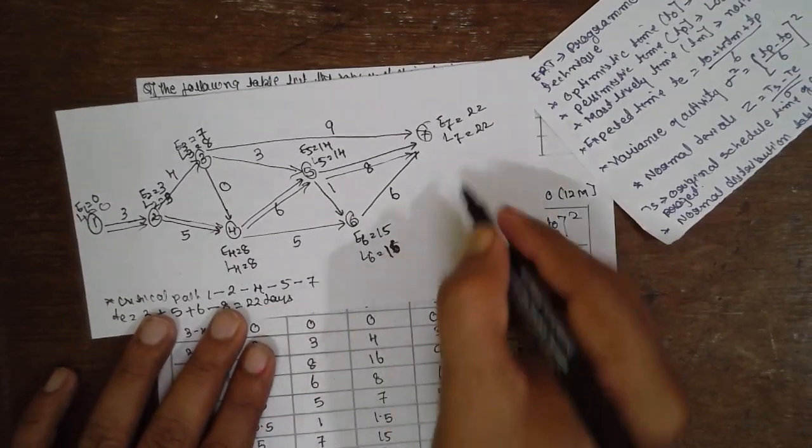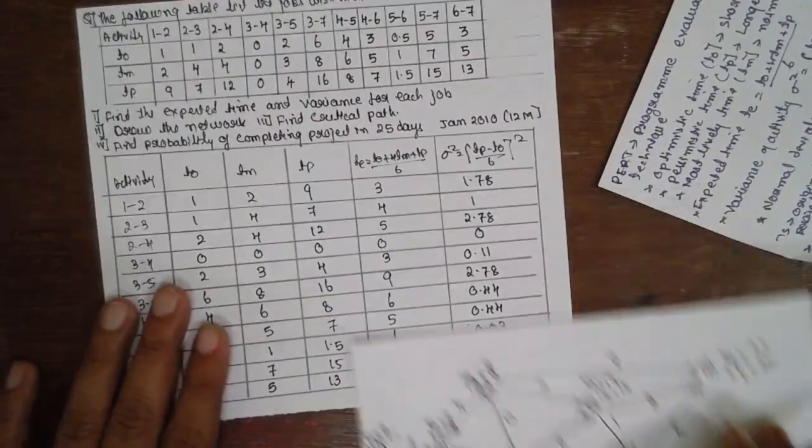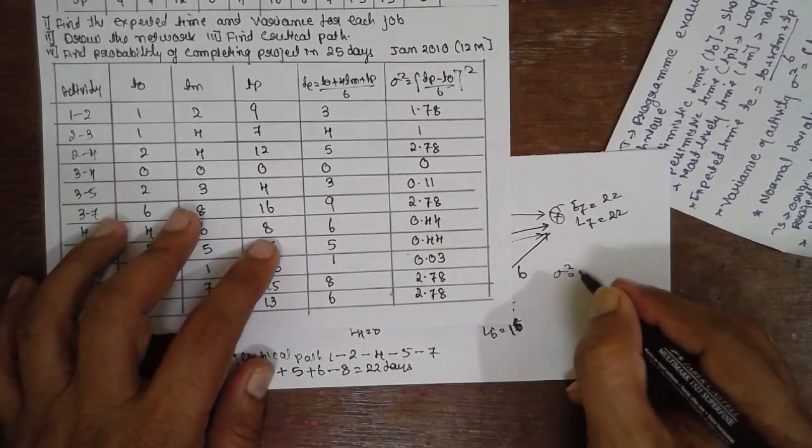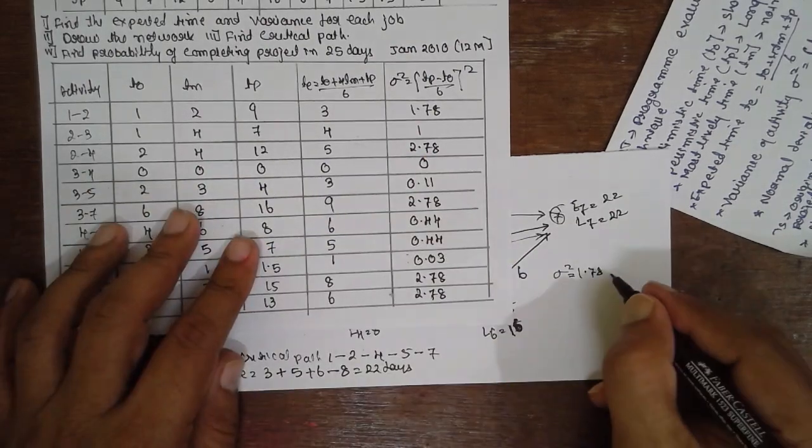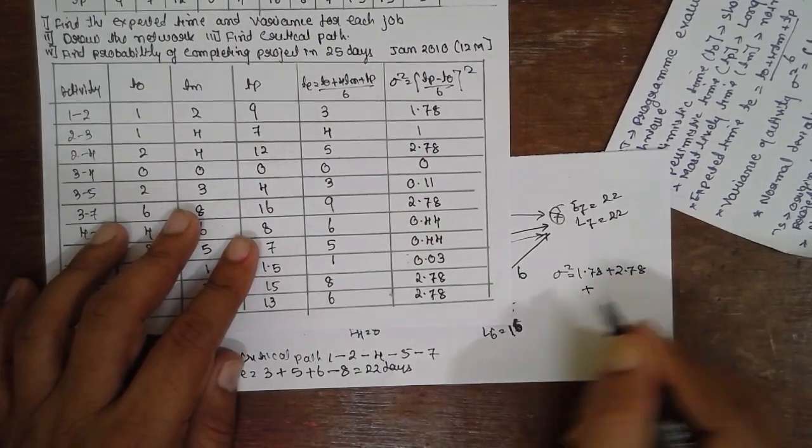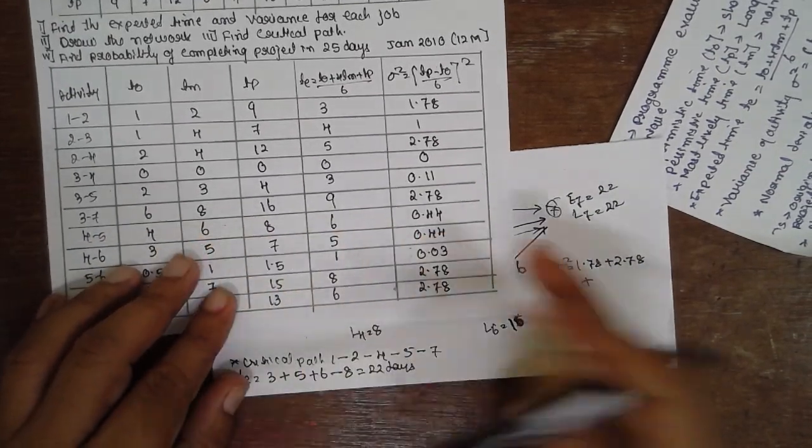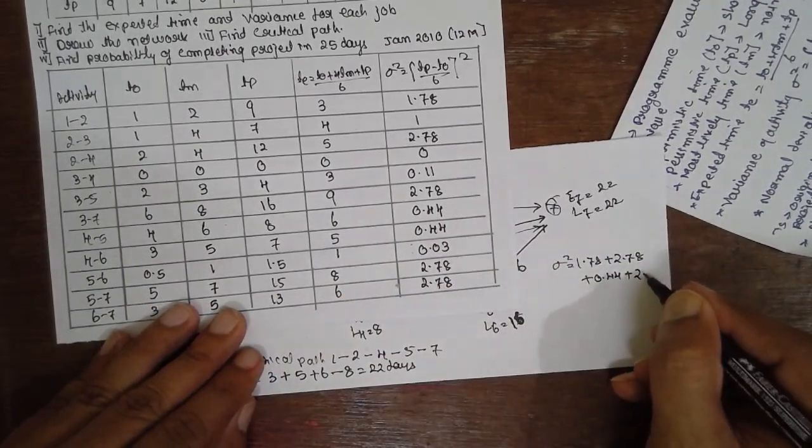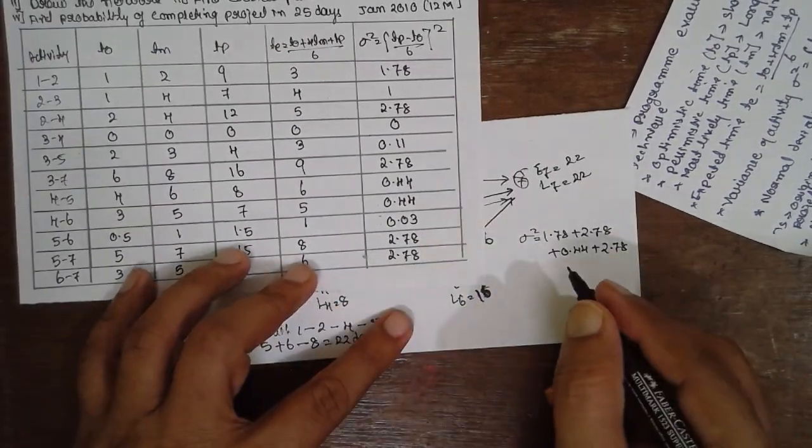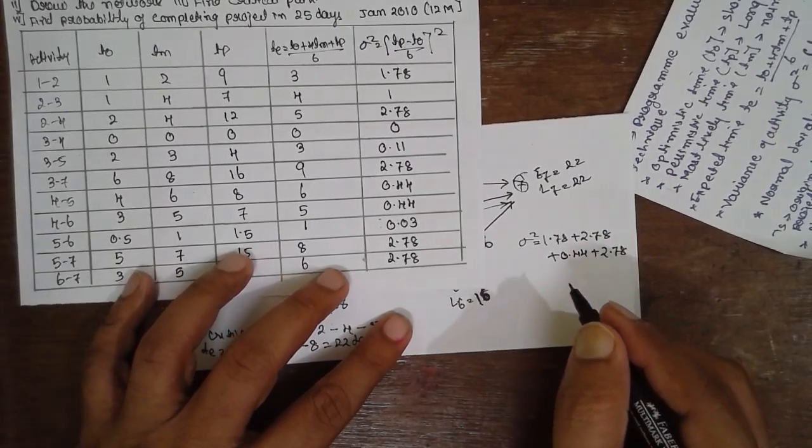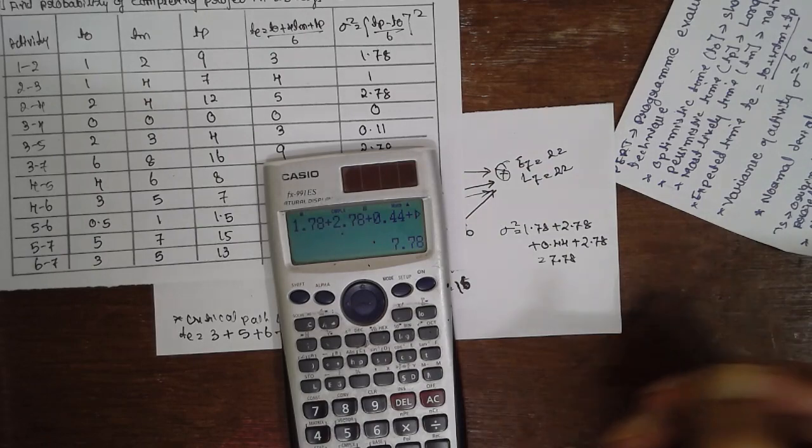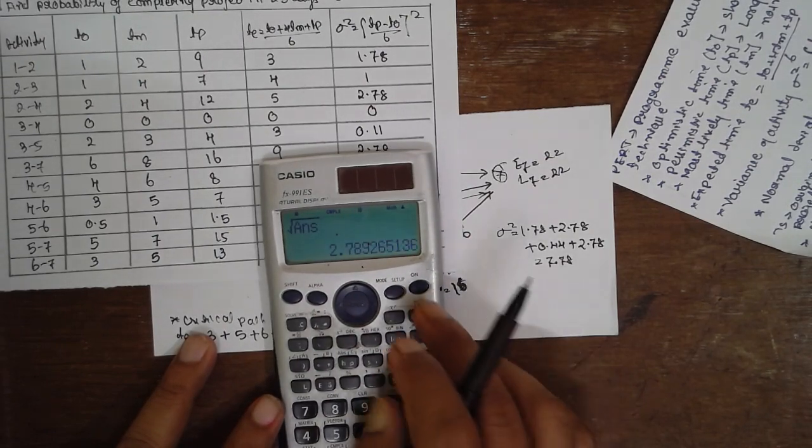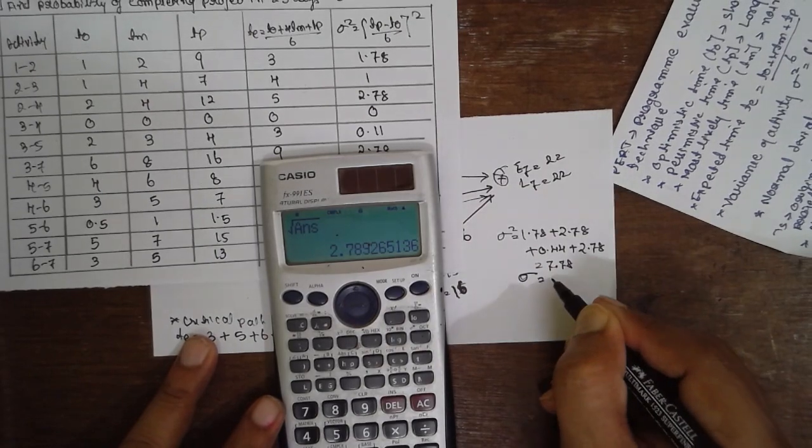Now find out the variance here. We will find out the variance sigma square. Variance should be obtained from the table here based upon the critical value. Now 1-2, 1-2 is 1.78. 2-4, 2-4, 2.78 plus 4-5. 4-5 is 0.44 plus 5-7. 5-7 is 2.78. Now we have to find out the variance. If we calculate, the value will be 2.78. This is the variance value we obtained. Go for square here. Sigma value will be 2.78 days.